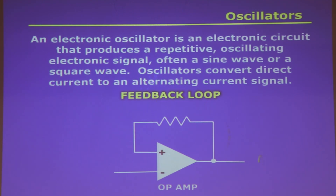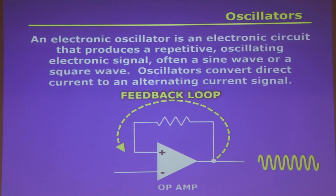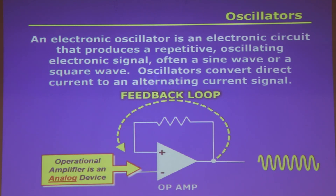How about oscillators? Electronic oscillators are an electronic circuit that produces a repetitive oscillating electronic signal, like a sine wave or possibly a square wave, that repeats over and over again. An oscillator's job is to convert direct current to an alternating current signal. What they use is a feedback loop.